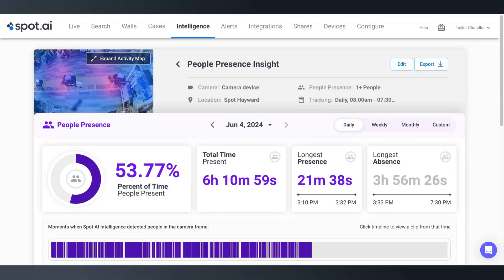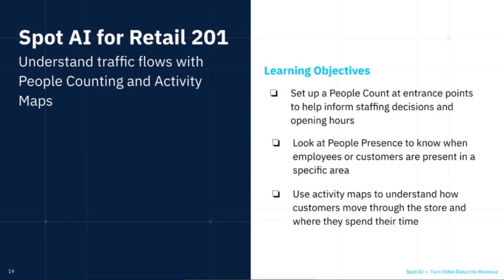All of these insights can help retail owners understand how customers are moving throughout their facilities, where employees are spending their time, and how to make smarter business decisions based on video data. To recap, we've learned how to create a people count insight, view people presence data, and gain greater understanding of people flow and traffic with activity maps. If you'd like more industry-specific insights into how retail customers are streamlining their operations with video intelligence, check out the other videos in our Spot AI for Retail series.